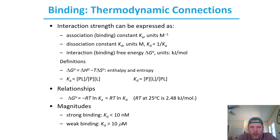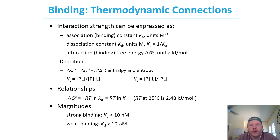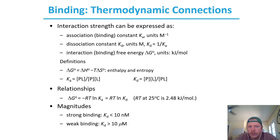We can discuss binding and interactions between a protein and a ligand in a couple of different ways. We can use our association constant, k sub a, with units of inverse molarity. Our dissociation constant, k sub d, has units of molarity because Kd equals 1 over Ka. Ka equals protein-ligand concentration divided by protein times ligand concentration, and Kd equals protein concentration times ligand concentration divided by protein-ligand concentration.